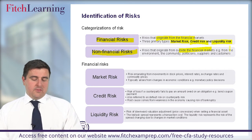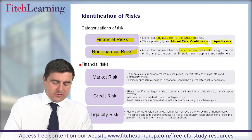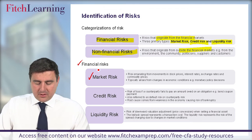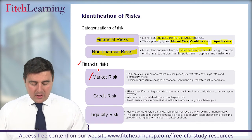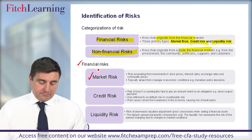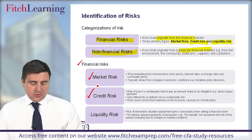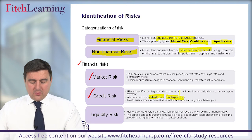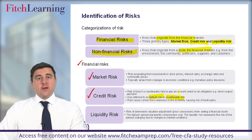Starting with financial risks: market risk is the risk emanating from movements in stock prices, interest rates, exchange rates, and commodity prices — typically arising from changes in economic conditions such as monetary policy decisions. Credit risk is the risk of loss if a counterparty fails to pay an amount owed on an obligation, such as coupon payments; also called default or counterparty risk. Its root cause is often weaknesses in the economy causing the risk of bankruptcy. Liquidity risk is the risk of a downward valuation — a price concession — if you need to liquidate a position quickly.